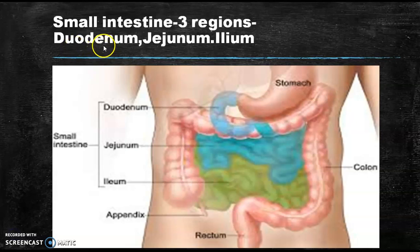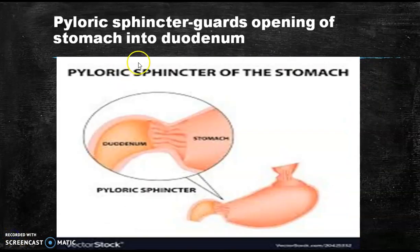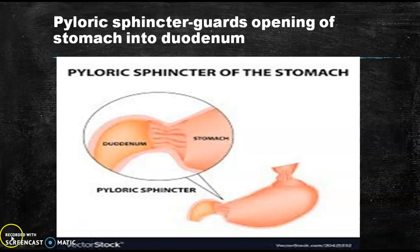The small intestine is divided into three regions: duodenum, jejunum and ileum. Duodenum is followed by the stomach, then jejunum, then ileum. There is also a pyloric sphincter that guards the opening of the stomach into the duodenum, deciding whether to open or not.